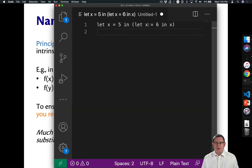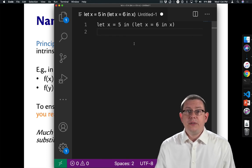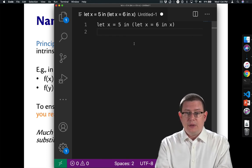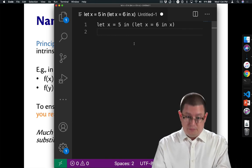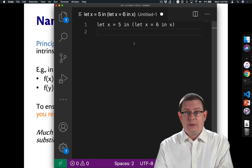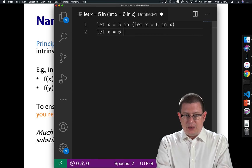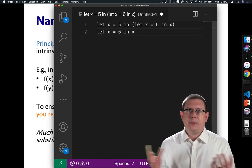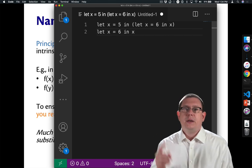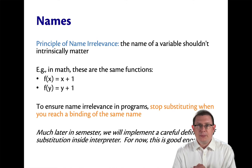Suppose we had a program, let x equal 5 and let x equal 6 in x. What does that actually mean? Well, we've now developed enough to figure it out. Evaluate 5 to a value, 5. And then substitute 5 for x. Well, that would mean taking let x equal 6 in x and substituting 5 for x. What does it mean to substitute 5 for x in it? We just agreed on what it means. It means stop substituting when you reach a binding of the same name.